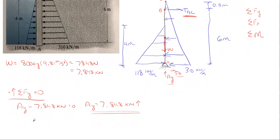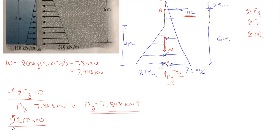Now I'll sum moments to find one of my horizontal reactions. I'm going to sum moments at point A so that A_x and A_y drop out of the equation. Summing moments at A equals zero. The tension force T_BC at six meters away will be rotating clockwise about A, so it is negative: minus T_BC times six meters. The water force of 118 kilonewtons per meter will also be rotating clockwise, so it is also negative.